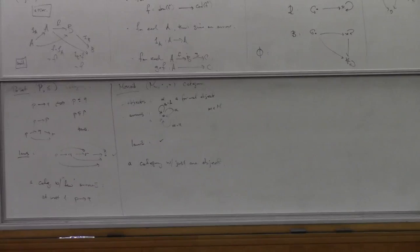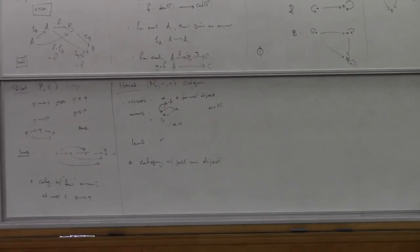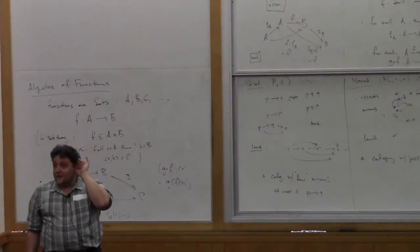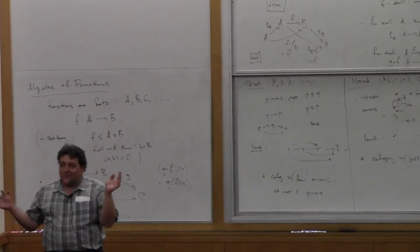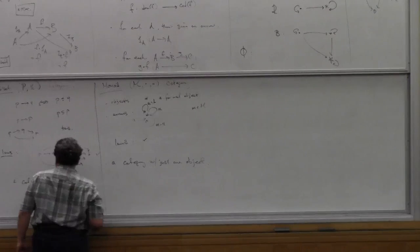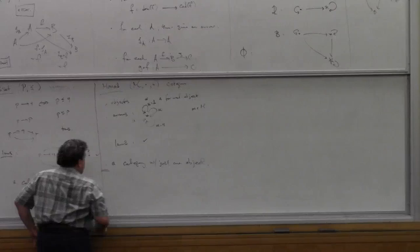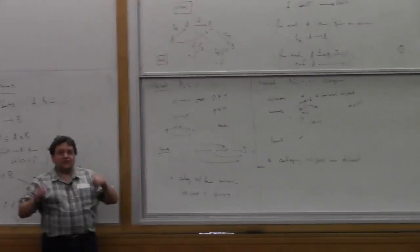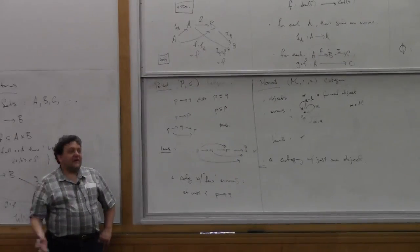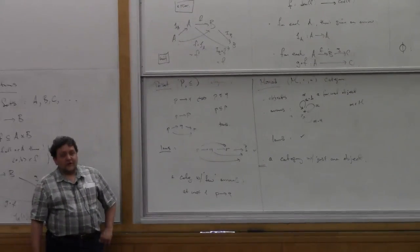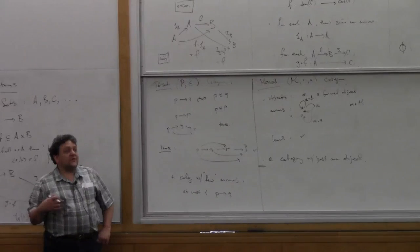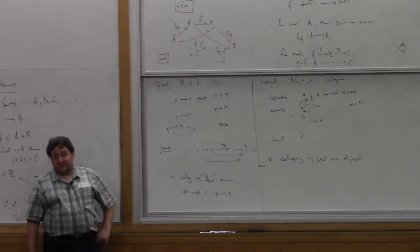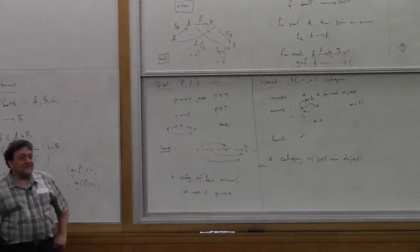Perhaps the first structural notion in category theory — one that can be defined entirely in terms of the language of categories — is the concept of isomorphism. You've encountered isomorphism in many different ways. Sometimes people say things are isomorphic if they have all the same properties, but that's not really the definition. The definition of isomorphism is a category-theoretic one.